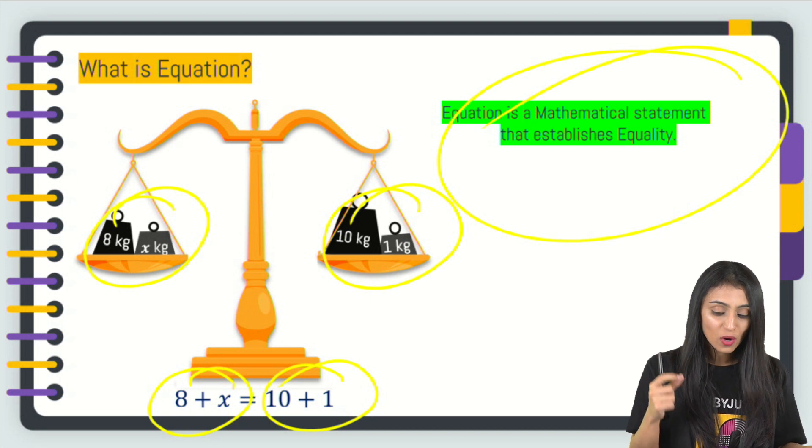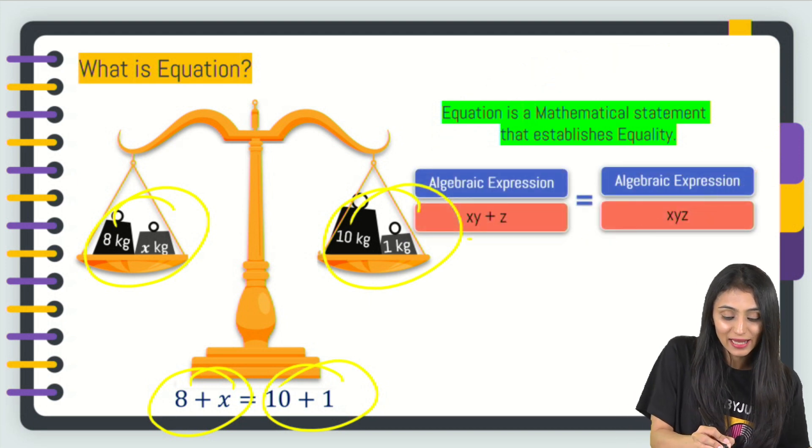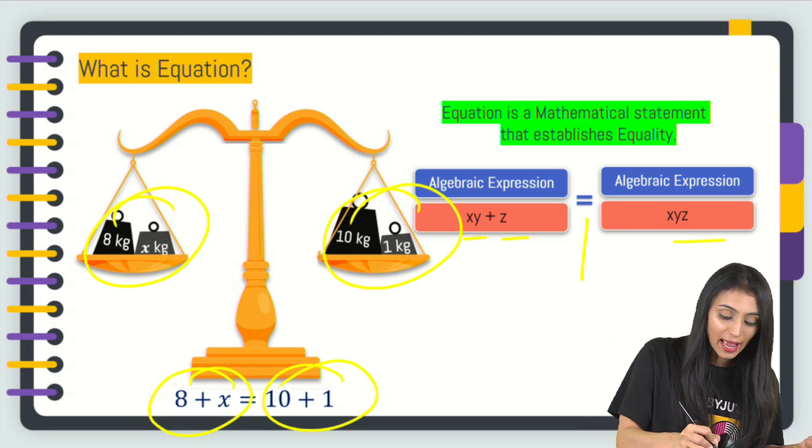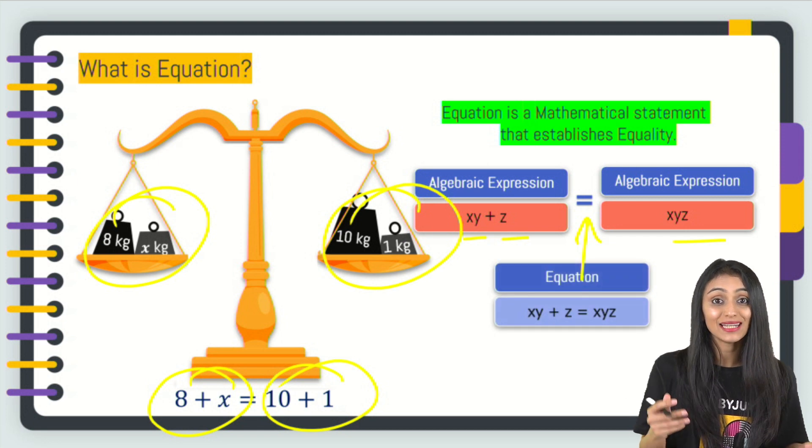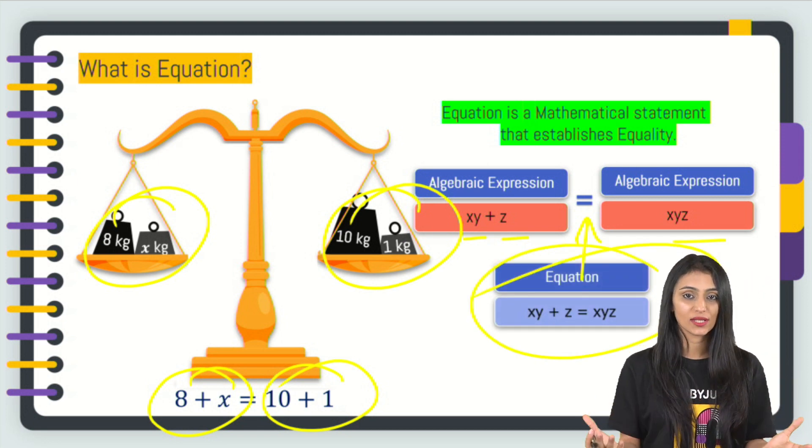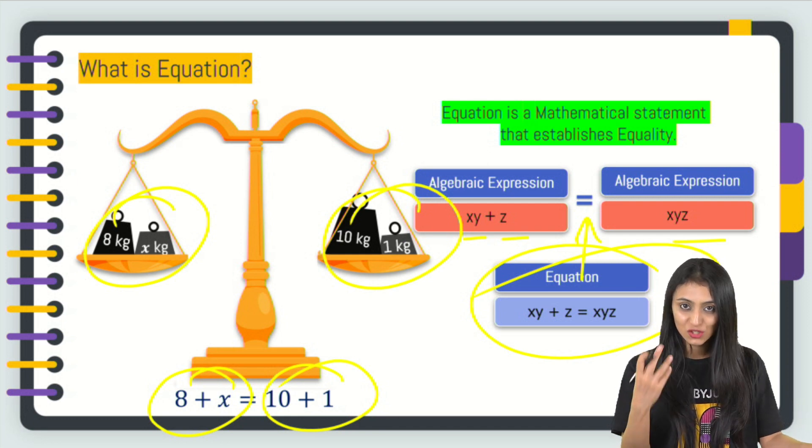Now, if I try to write this thing in terms of algebraic expression, I can say that xy + z equals xyz. Both sides we have got algebraic expressions, and this equal sign over here is representing that this is actually an equation. That's what an equation is—when both LHS and RHS are balanced, when they are equal. Now let's move ahead to the main topic that we have.